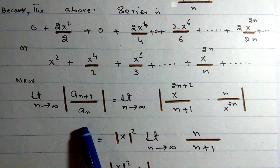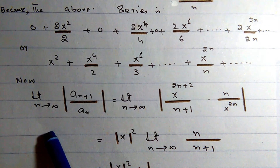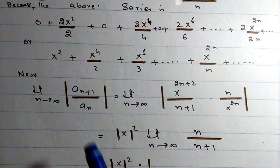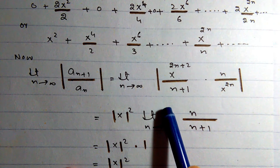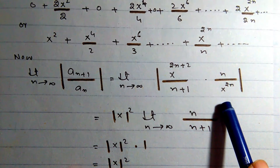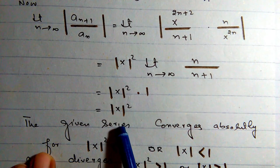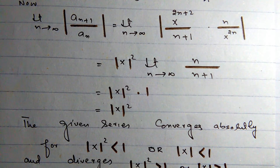Applying the ratio test: limit as n→∞ of |a_(n+1)/a_n| = limit of [x^(2n+2)/(n+1)] · [n/x^(2n)]. This simplifies to |x|² · limit of n/(n+1) = |x|².